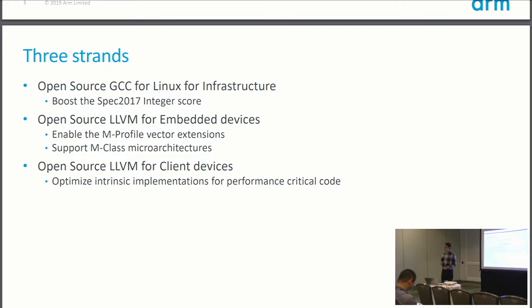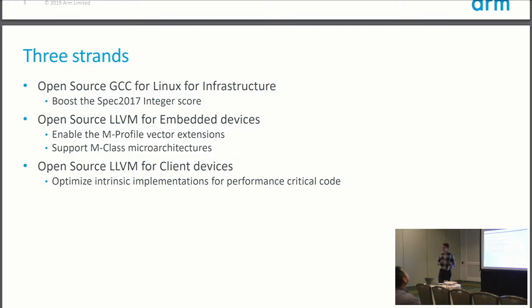We also look at LLVM for client devices — things like Android or Chrome OS. There, where we think we can add additional value is by optimizing implementations of the Neon intrinsics. We're looking not so much at benchmarks, but at real-world code — for example, libjpeg from Chromium. We want to make sure that where people have written optimized Neon intrinsics code, it's performing as well as possible so that Neon intrinsics stay competitive against writing inline assembly.